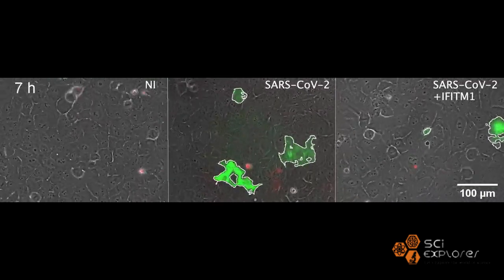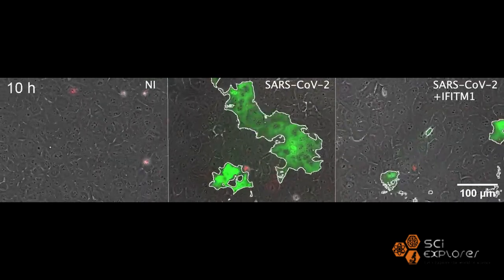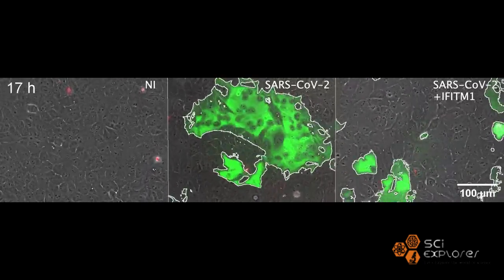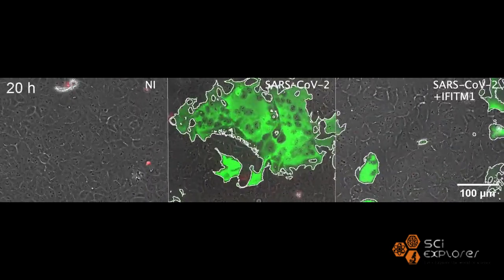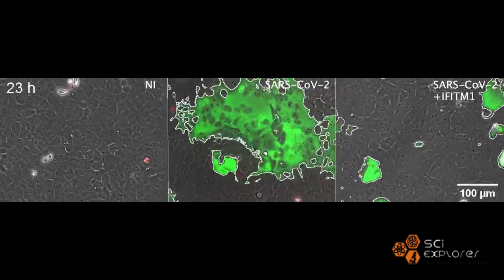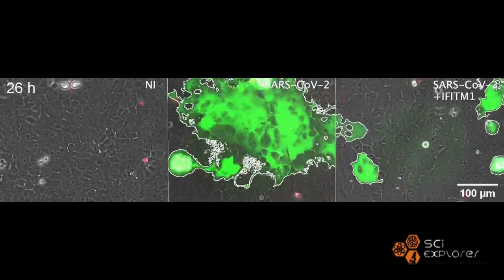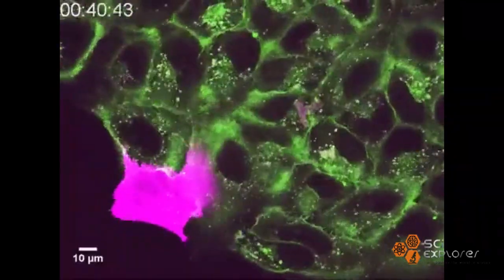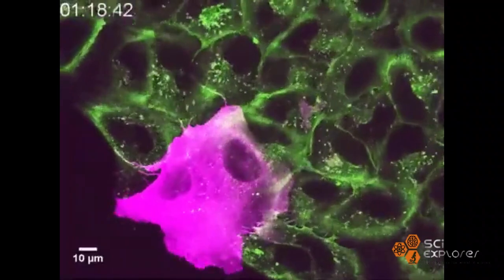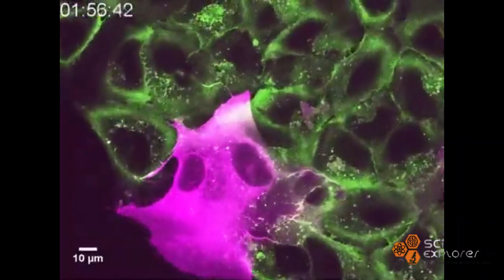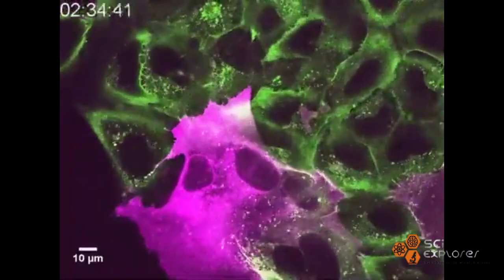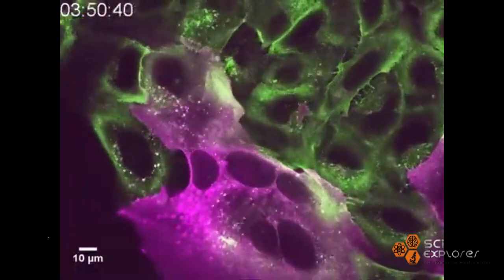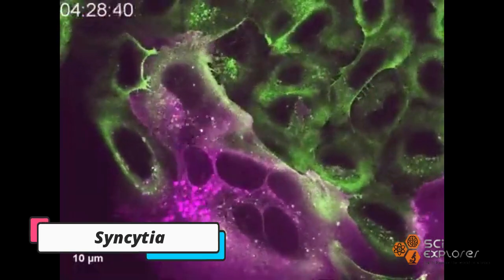At this point, the infected cell fuses to neighboring cells expressing angiotensin-converting enzyme 2, ultimately developing massive individual respiratory cells that contain up to 20 nuclei. These fused structures are called syncytia.